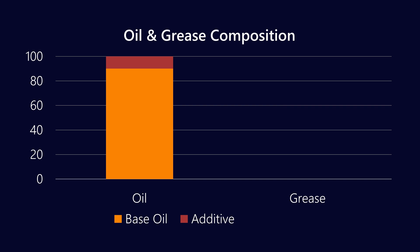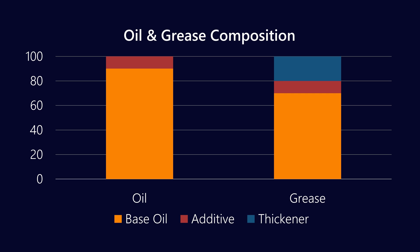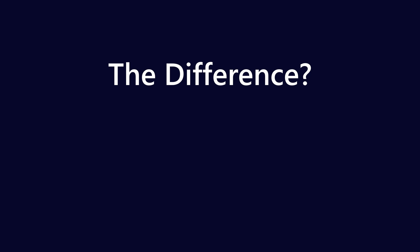With greases, we've got base oil in a much lower proportion — around 70%. Additives make up about 10% of the formulation, and what's different is that about 20% of the volume is taken up by what is called thickener. So if we were to answer the question: what's the difference between oil and grease? It's the thickener. Nah, just kidding — the reality is that there are plenty of other differences, so let's talk about some of those.